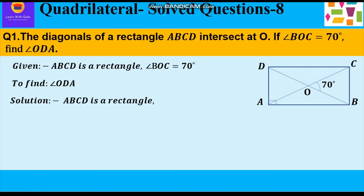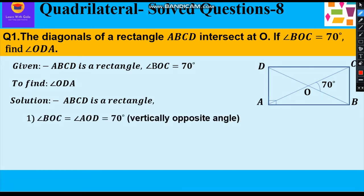Let's start with the solution. ABCD is a rectangle in which the diagonals are intersecting at O. We can say that angle BOC and angle AOD form vertically opposite angles and therefore both are equal to 70 degree.